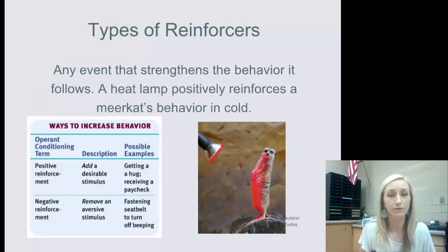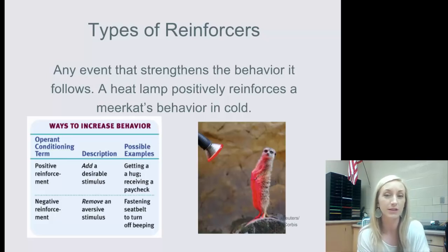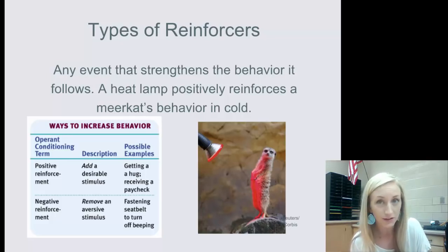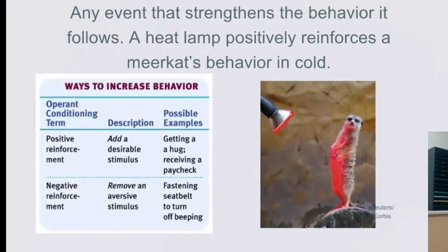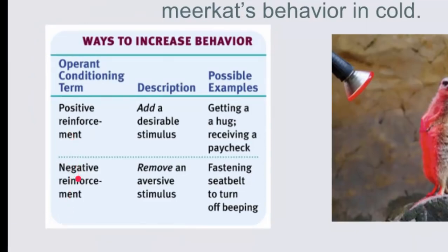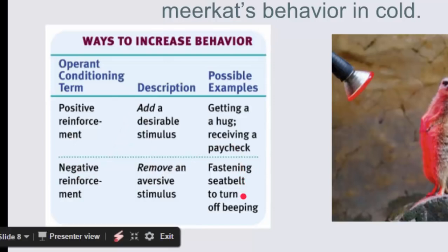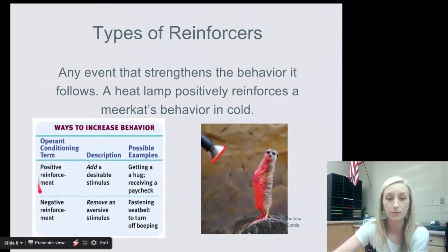A reinforcer is any event that strengthens the behavior it follows. For example, a heat lamp positively reinforces a meerkat's behavior in the cold — they understand they'll get warmth by performing a certain action. This chart gives a glimpse of the operant conditioning terms we're about to cover: positive and negative reinforcement, what they do, and some possible examples. I encourage you to pause and look over those — in the next slides I'll be explaining them further, but this is a good reference to write down.